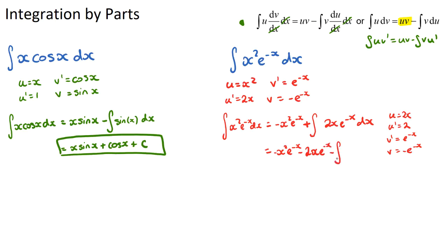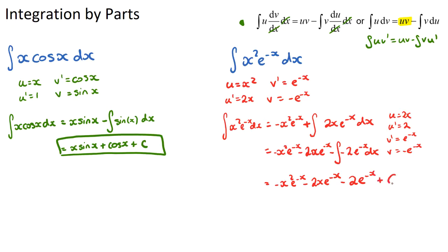Continuing, we have minus the integral of −2e^(−x) dx, which gives a double negative, so plus the integral of 2e^(−x). The integral of 2e^(−x) is −2e^(−x). Combining everything: −x²·e^(−x) − 2x·e^(−x) − 2e^(−x) + c. That is our final answer for the second question.